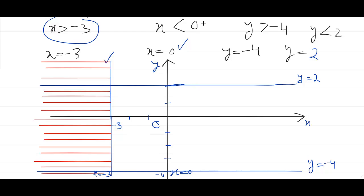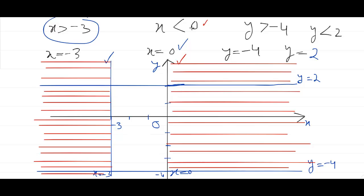Now take the second inequality: x is less than 0, where x equals 0 is the y-axis. Since x is less than 0, the required region is on the left-hand side, but we will shade the opposite side — that is the right-hand side. Now we have shaded the unwanted region of this inequality.